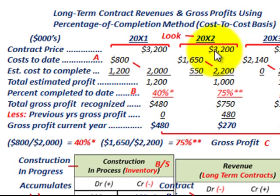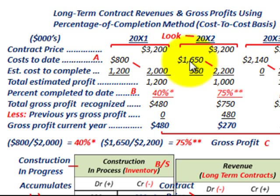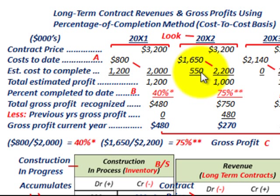Now looking at year 20x2, which we're concentrating on: the contract price is the same, $3,200. Our cost-to-date is $1,650, our estimated cost to complete is $550, so our total estimated cost to complete this contract is $2,200.